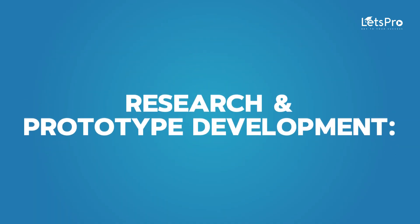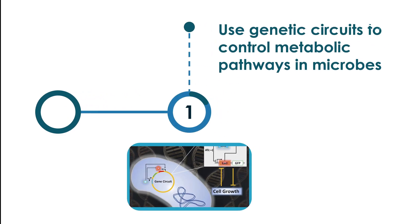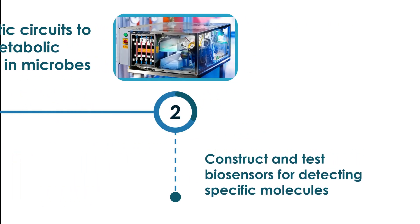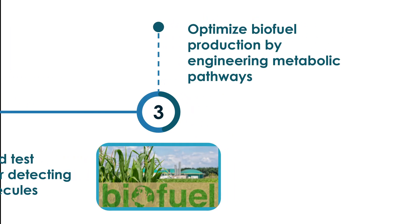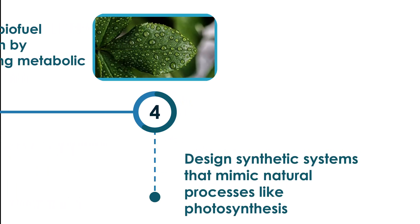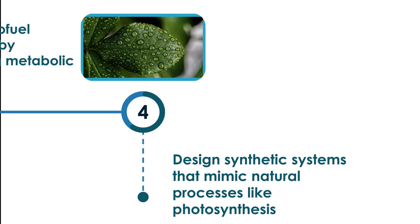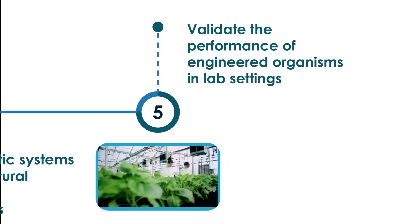For research and prototype development: use genetic circuits to control metabolic pathways in microbes; construct and test biosensors for detecting specific molecules; optimize biofuel production by engineering metabolic pathways; design synthetic systems that mimic natural processes like photosynthesis; and validate the performance of engineered organisms in lab settings.